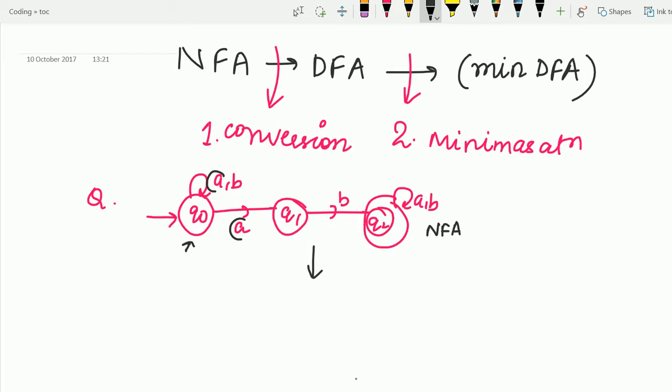So on a particular state and a particular symbol, we should have exactly one transaction. So that is very important. And each cell will contain a single value, single data element only. So let's make the transition table of NFA.